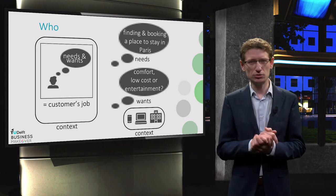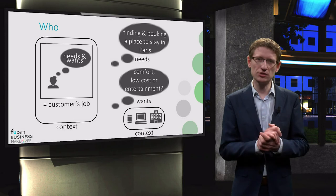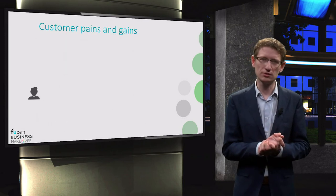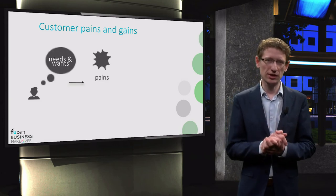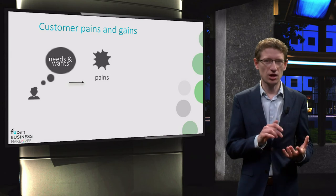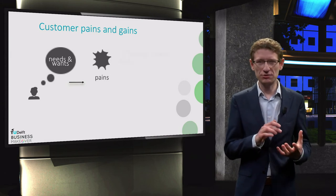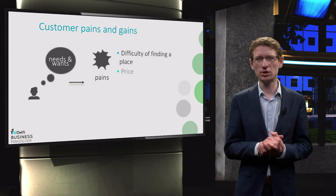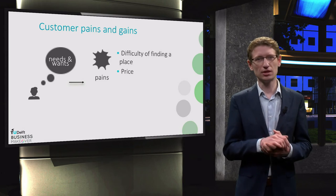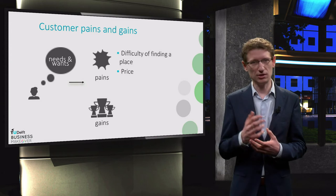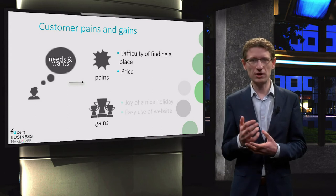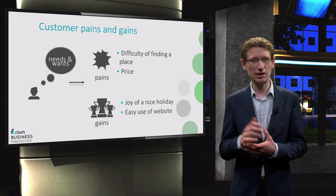The context in which the customer has a job to be done can be quite diverse, and I'll come back to why this context is important. So now we understand what job the customer wants to have done. Doing such a job can create pains or gains. Pains are anything that annoys a customer when getting a job done — in our example, the main pain is that it's so difficult to find the right holiday home for the right price. Gains are anything that makes the customer happy, that he dreams about — in our example, the main gain is the joy of finding a nice, affordable holiday home.